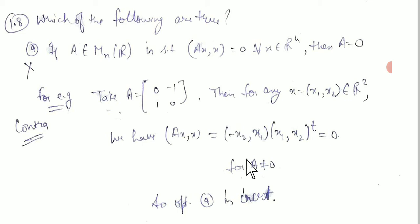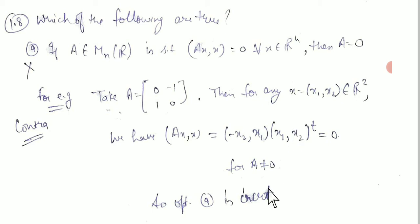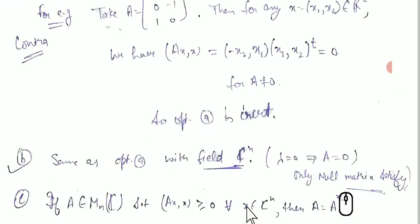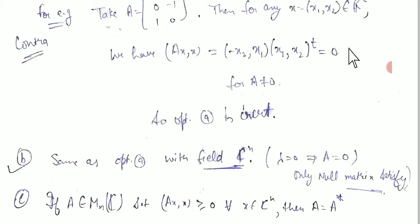Considering vectors x1, x2 and their transposes: we have a matrix giving 0, but we have a non-zero inner product, so option A is incorrect. If we have a nilpotent matrix, the rank is 0. A nilpotent matrix is the only case satisfying the condition, so option A is incorrect and the nullpotent case is satisfied.